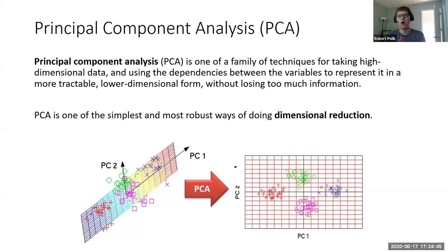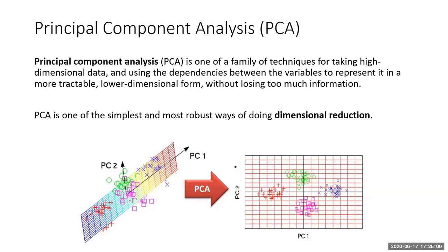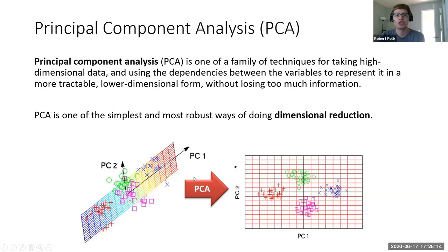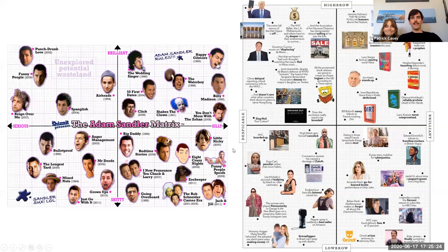Are there any questions on what principal component analysis represents or how it's done? Okay, good. I hope the picture helps — this is what's happening on 11 dimensions, and three dimensions to two dimensions you can at least visualize. If this makes sense, you're more or less good to go. We're going to get to some 100-dimensional datasets pretty soon, so things are going to get spicier.